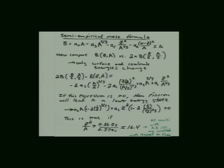Let's go back to the semi-empirical mass formula and look more carefully at what happens when you split a nucleus in half. The binding energy has several terms: a volume term that increases linearly with the number of nucleons (positive); a surface energy term with a minus sign because nucleons near the surface have fewer nearest neighbors and are less tightly bound; a Coulomb term that also decreases binding energy because all the protons repel each other; a symmetry term measuring how far you are from equal numbers of neutrons and protons; and a pairing term.